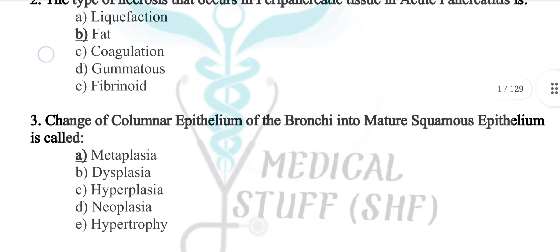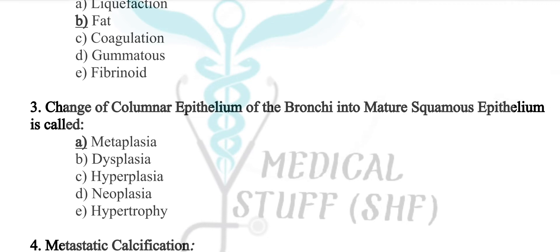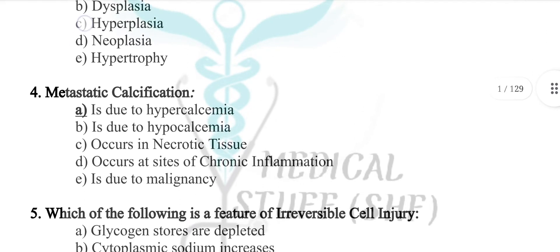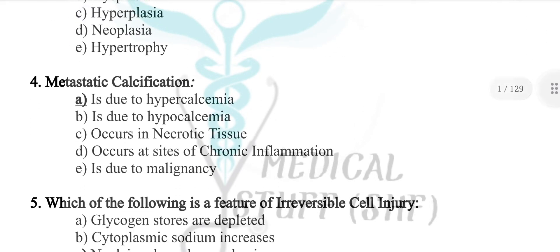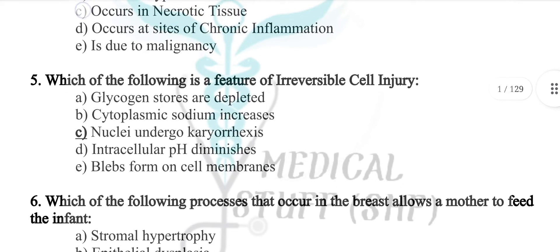The change of columnar epithelium of the bronchi into mature squamous epithelium is called metaplasia. The indication for metastatic calcification is due to hypercalcemia. Which of the following is a feature of irreversible cell injury?